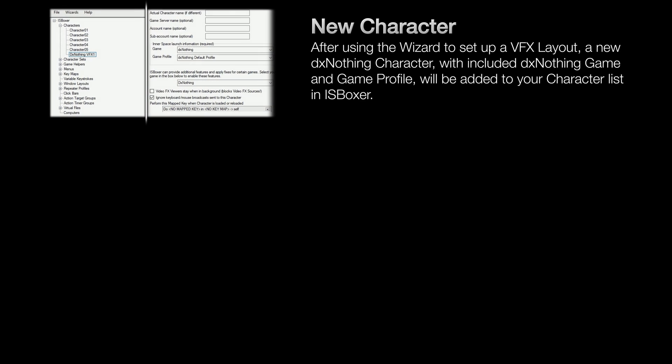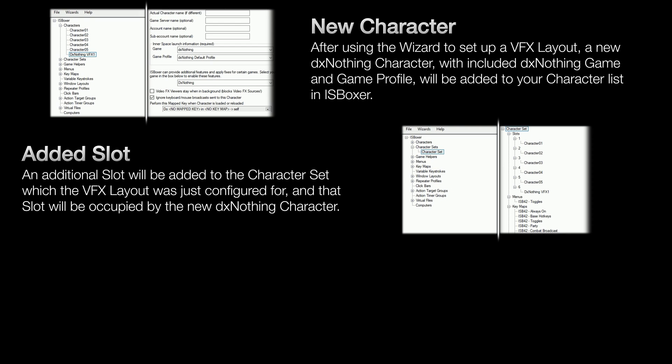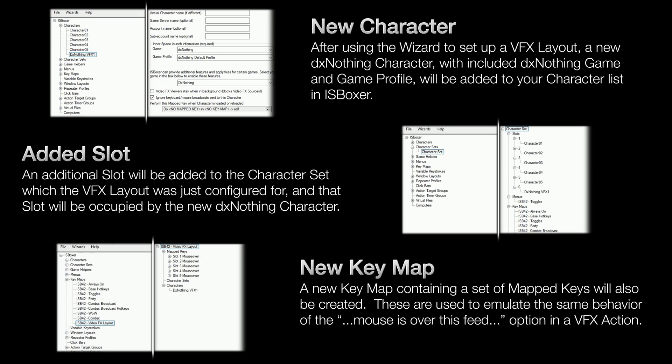Now, after creating the VFX layout, three things in IS Boxer are going to change. First, you'll have a brand new DX Nothing character added to your character list. Second, an additional slot will be added to your character set, and that DX Nothing character will be occupying that space. And finally, you'll have a new key map with a set of mapped keys related to mouseover.